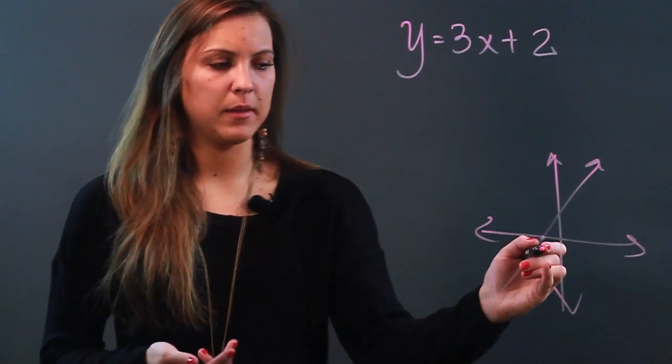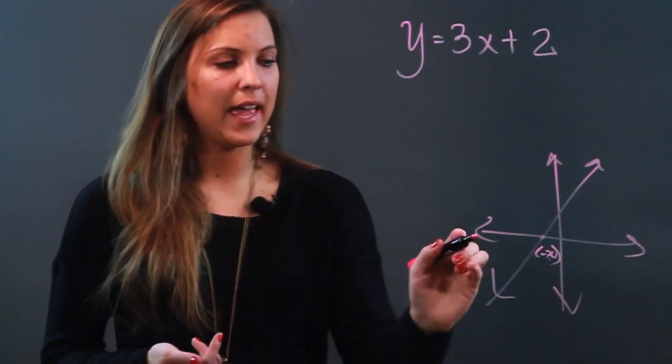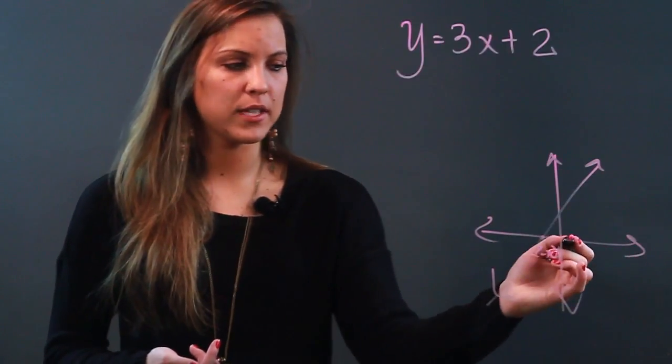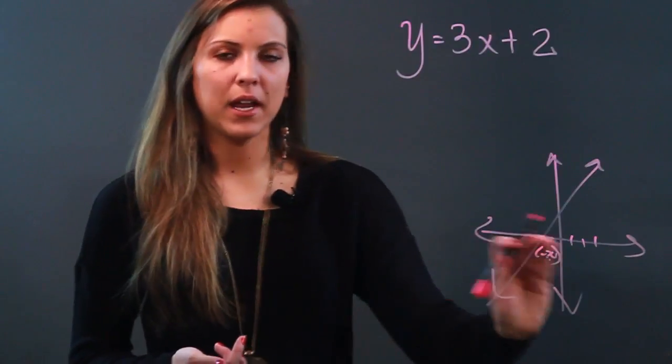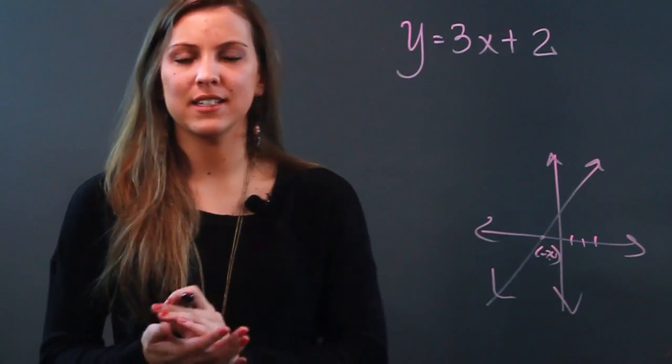This coordinate we can estimate to be about negative 2, 0. But anywhere that it is along the x-axis, the y will be 0. This point is 1, 0, that's 2, 0, that's 3, 0. So what I know is that wherever my x-intercept is, y is 0.